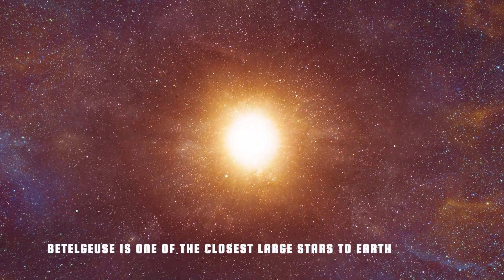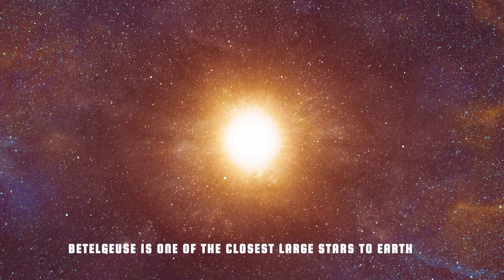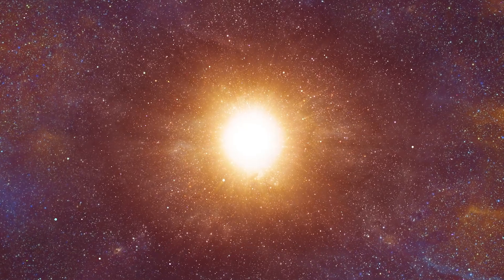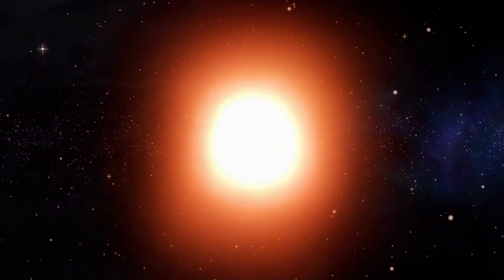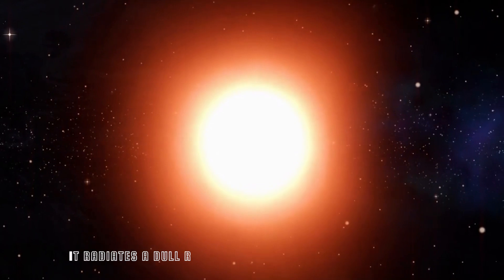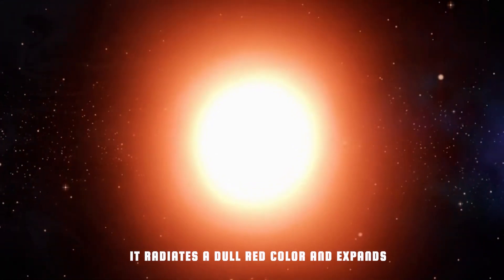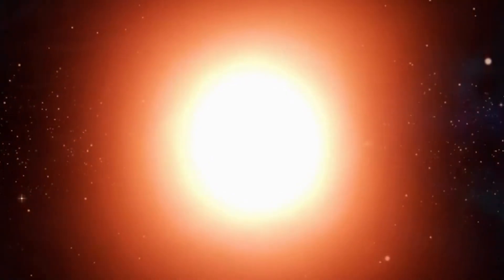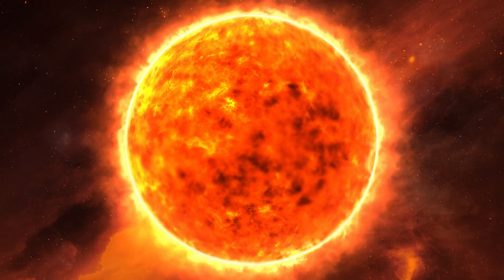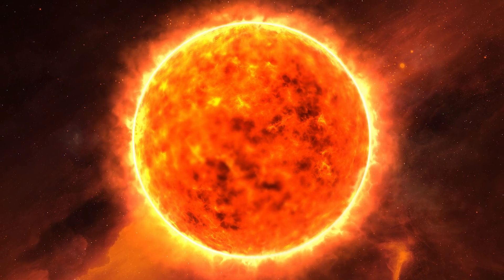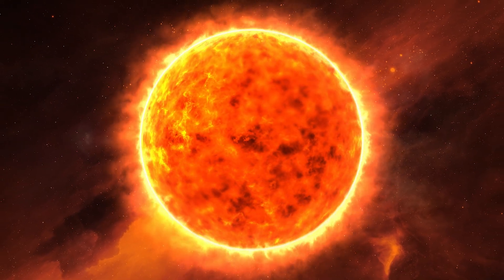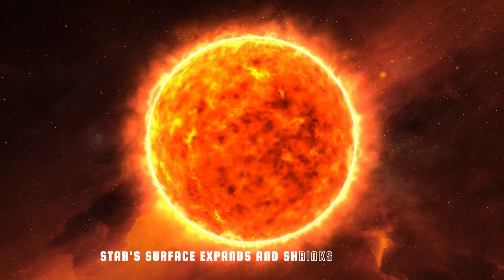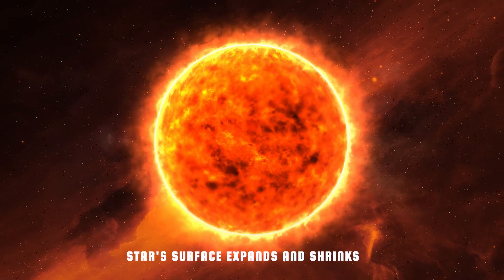Betelgeuse is one of the closest large stars to Earth, located around 700 light years distant. It's an ancient star that has reached the stage where it radiates a dull red and expands, with the hot core's gravitational grasp on its outer layers very fragile. The star has a heartbeat, albeit one that is incredibly sluggish and erratic.